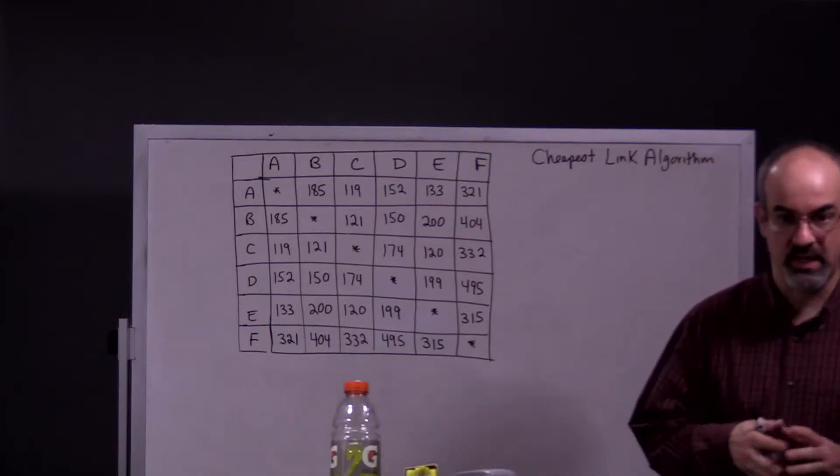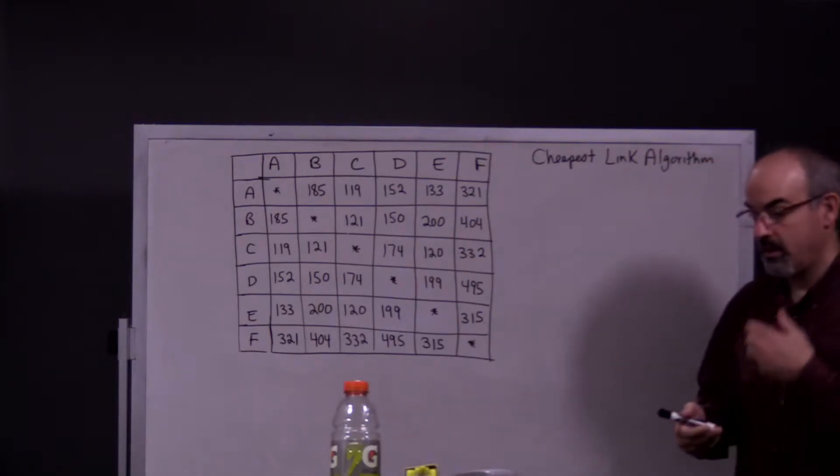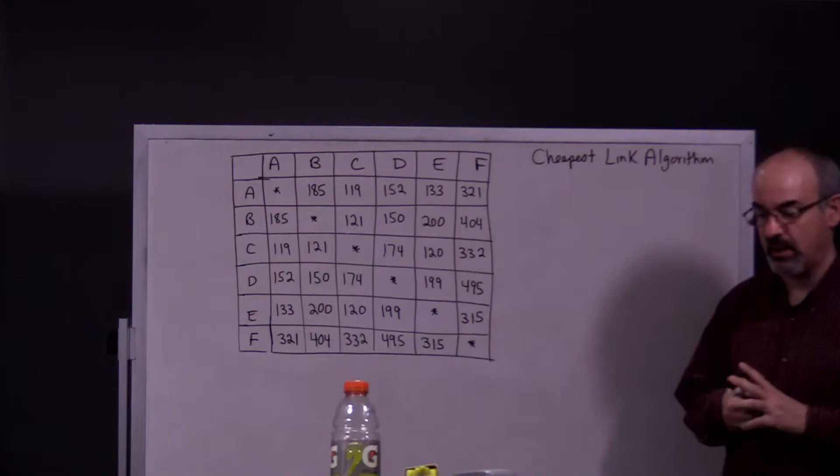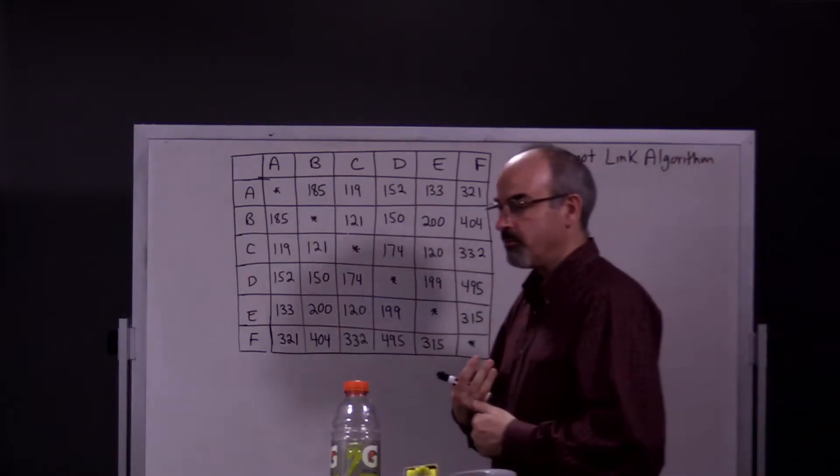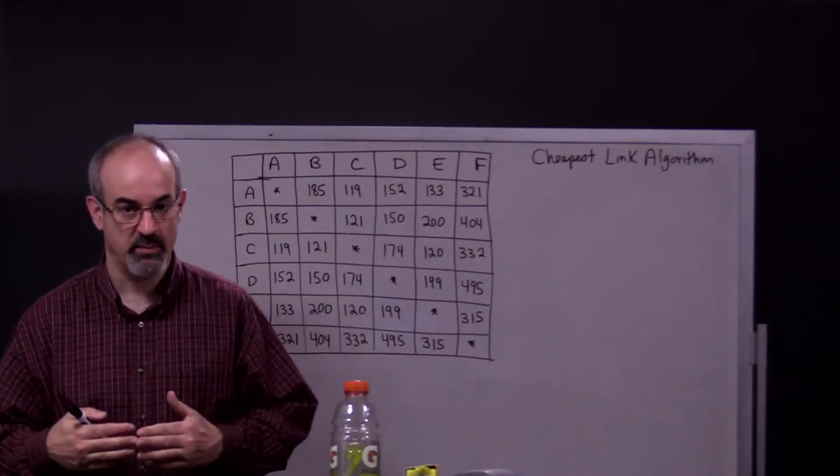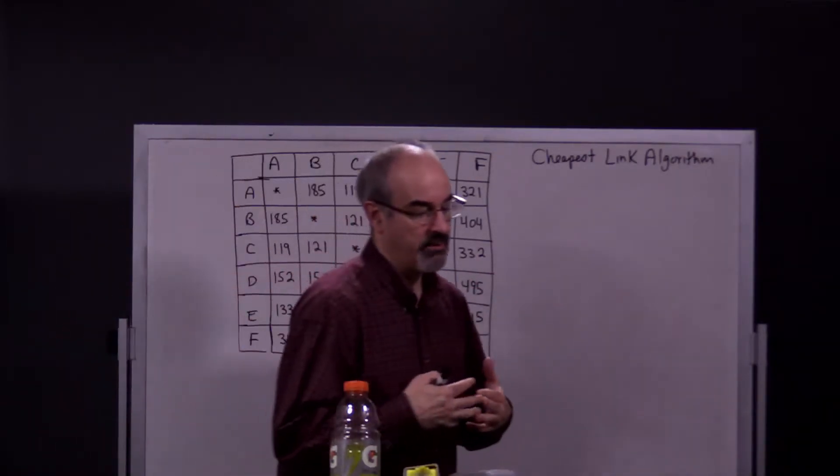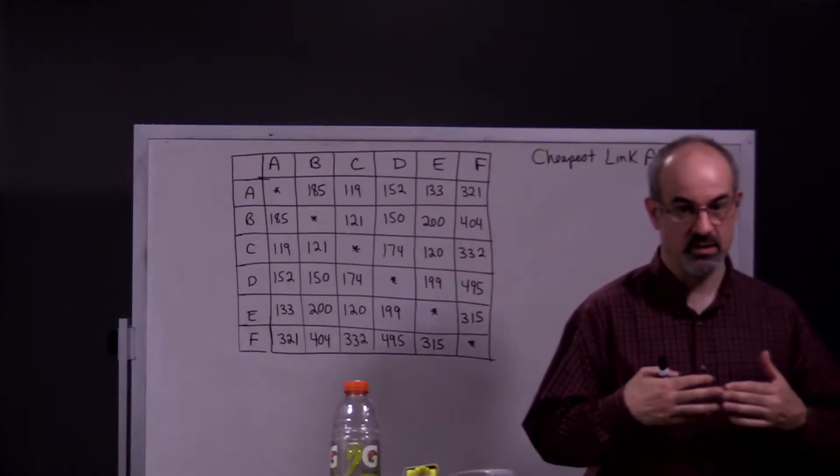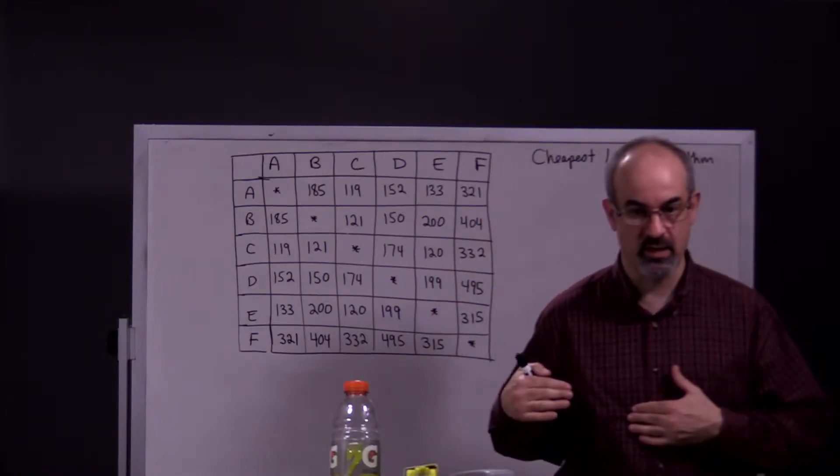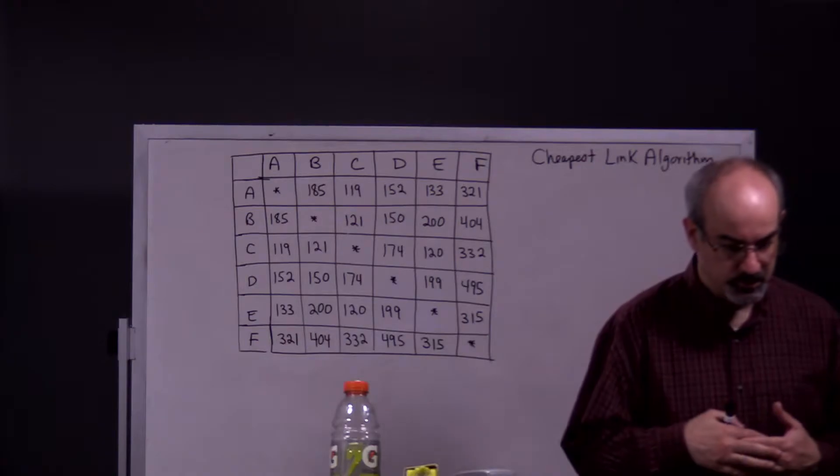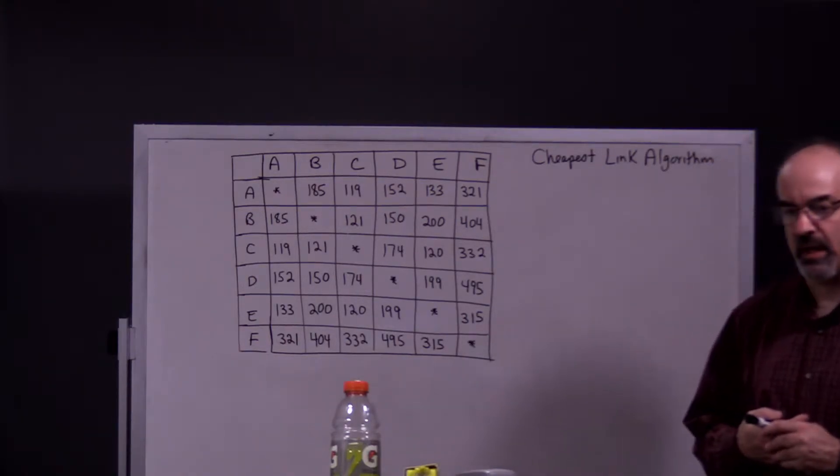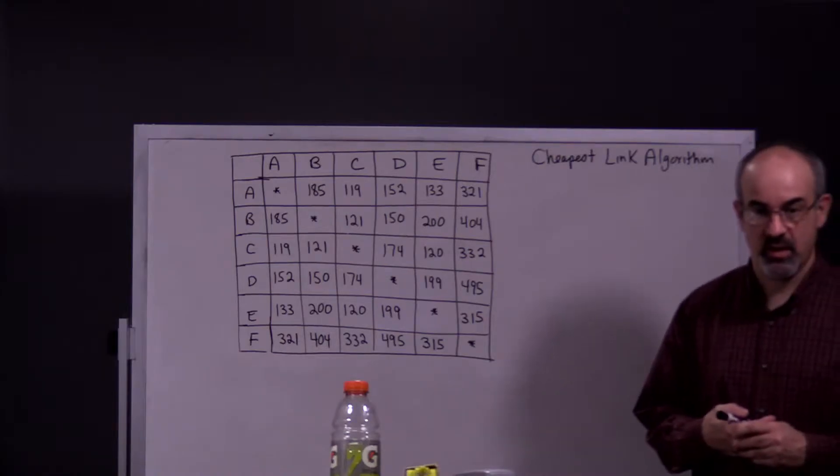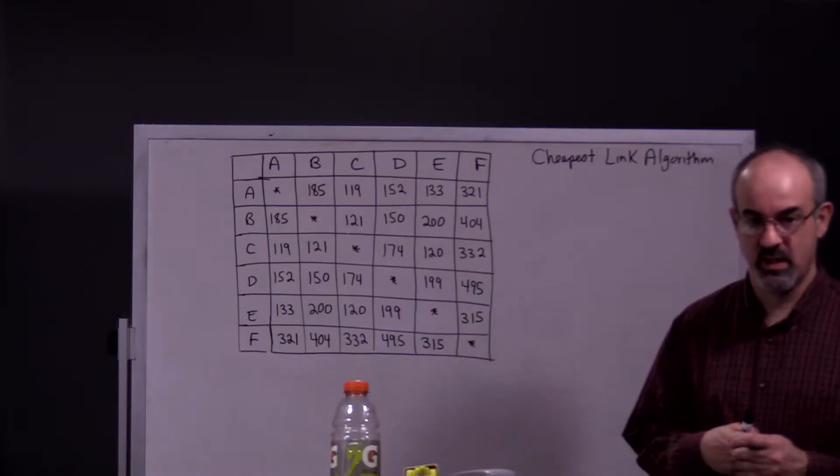You have to do that, it's not an option, and there's two conditions you can't violate. You can never have three edges coming into the same vertex because if you have three edges coming into the same vertex, that means you visited the vertex, left the vertex, then came back to it, which you're not allowed to do because we're trying to make a Hamilton circuit where every vertex is visited only once.